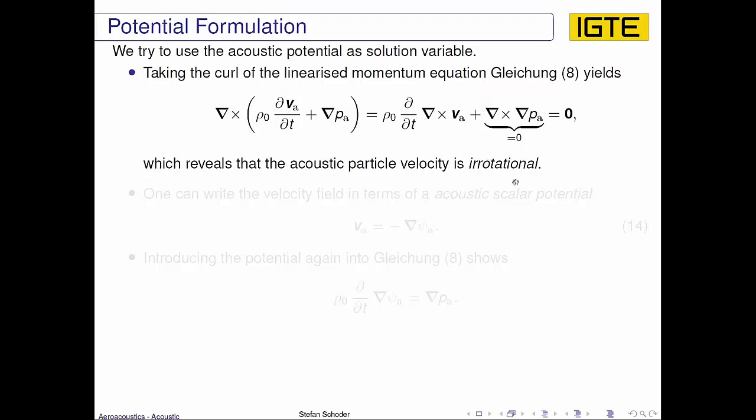We can model this acoustic particle velocity by a scalar potential. One can write the velocity field in terms of the acoustic scalar potential. The acoustic particle velocity itself is a gradient field, a gradient of a scalar potential.